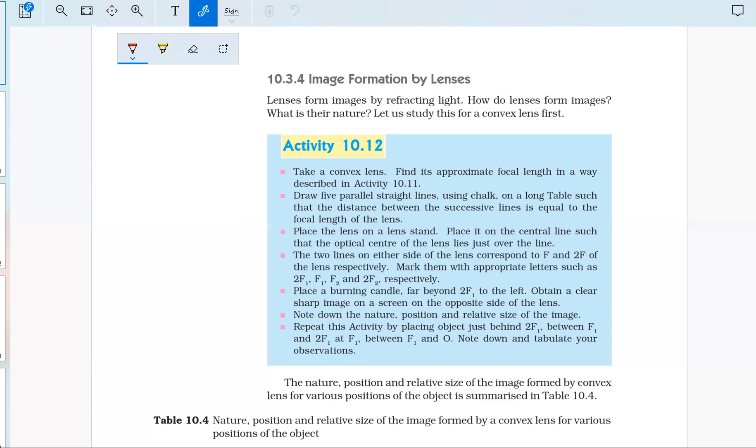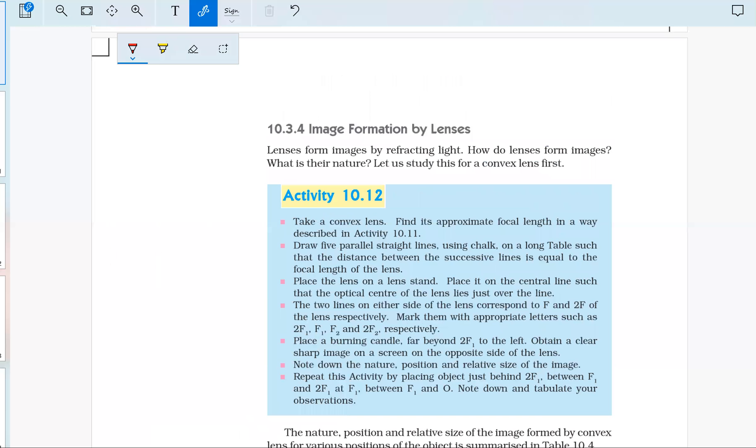What we are doing is first making five lines: one, two, three, four, and five, such that the distance between them is equal to the focal length. Suppose the focal length of the lens is 20 centimeters. This is the optical center, and the distance between each line is 20 centimeters. This way we have to make five lines.